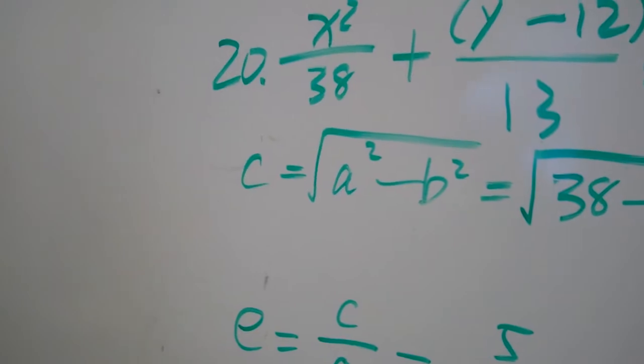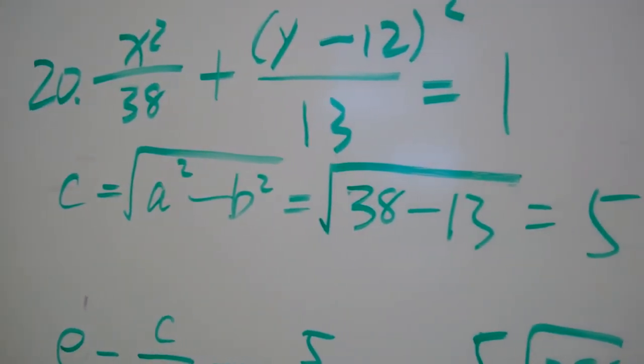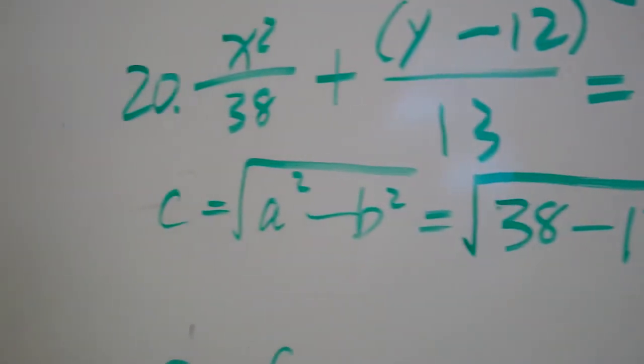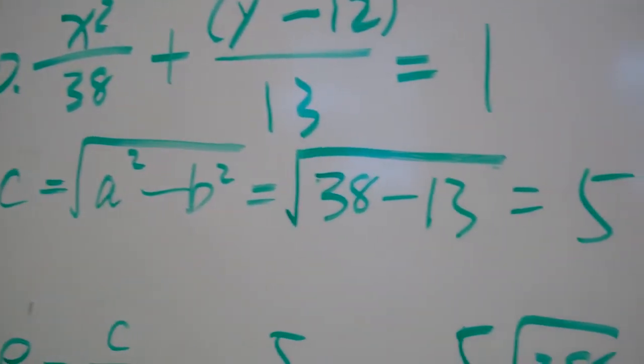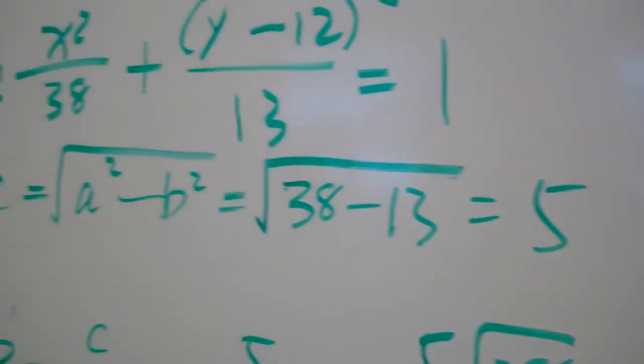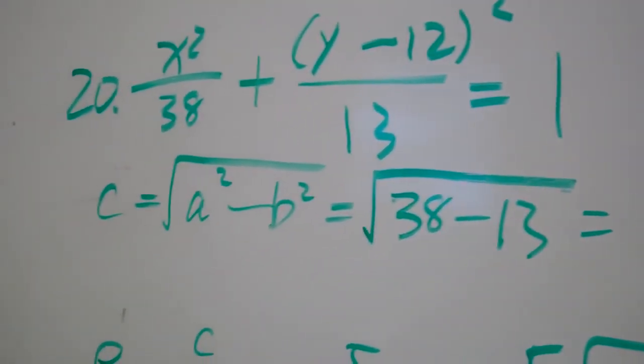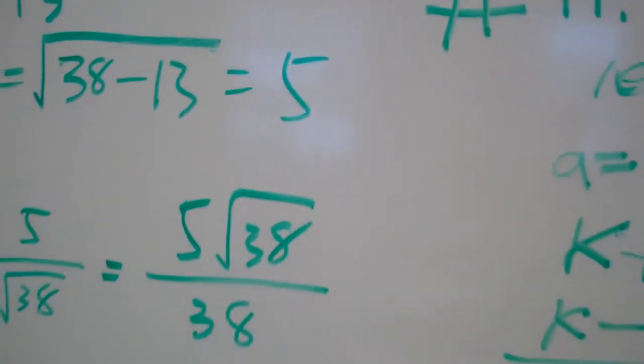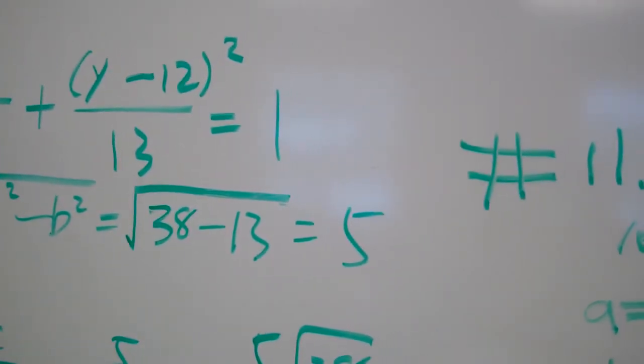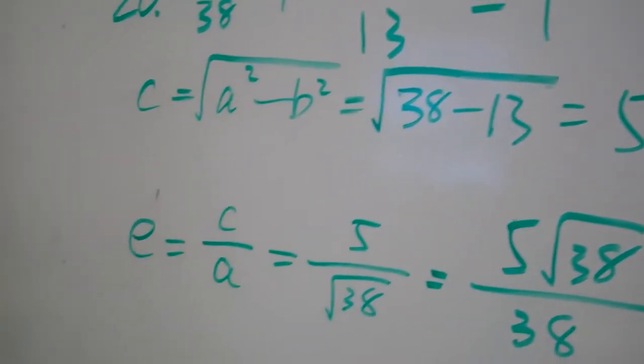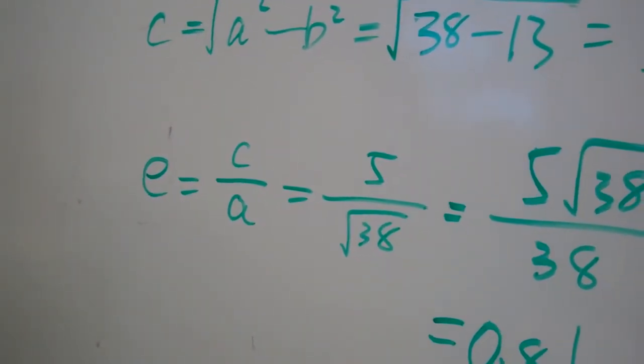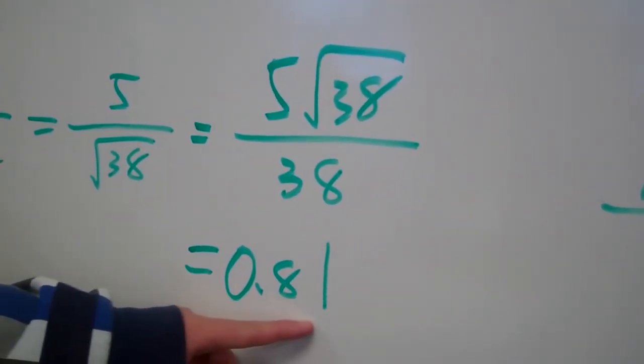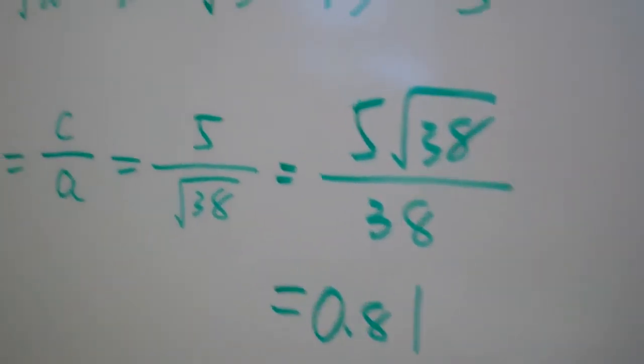So your C squared is A squared minus B squared then? So is C 5 or is C squared 5? C is 5. Is he right on that? Yeah. All right. Oh, yeah. He already square rooted it. Okay. So C is 5. And then E is equal to C over A, so that's why you did 5 over square root of 38? Yeah. Nice work.